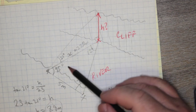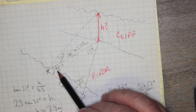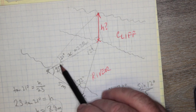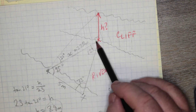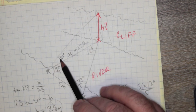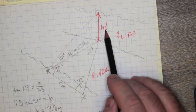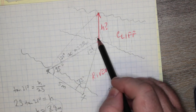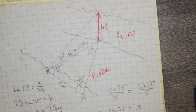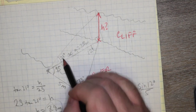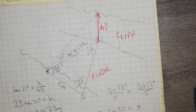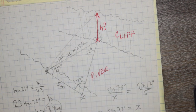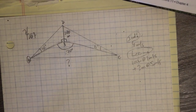Using tan: tan(21°) = H/23, so H = 23 × tan(21°) ≈ 8.8 meters. The height of the cliff is 8.8 meters — not hugely high, but still about two stories. We used the sine law to find the river width and then SOHCAHTOA for the right-angle triangle.